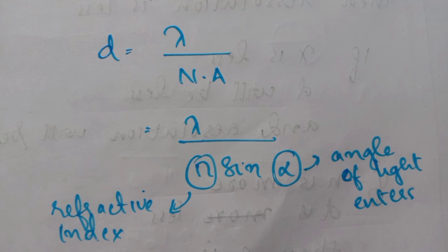At the same condition, if the particular angle is more, then d will be less and the resolution will be more. But in the case of angle, if the medium is air, 70 degrees will be the maximum angle.